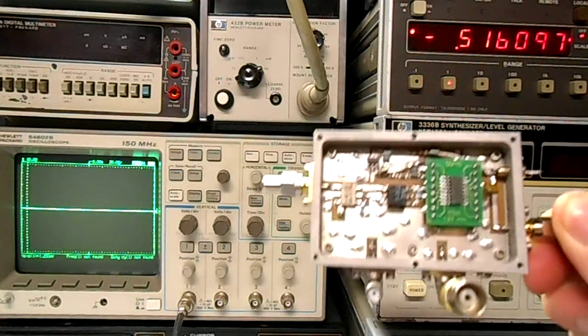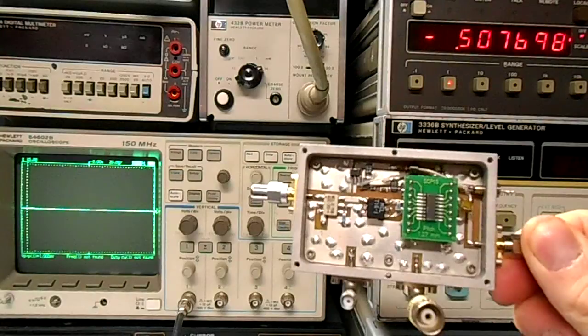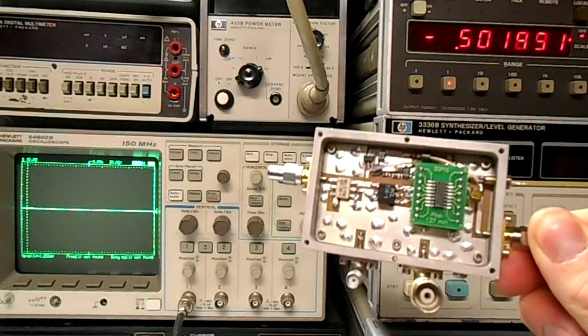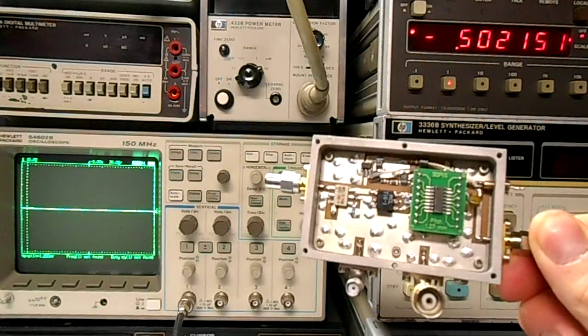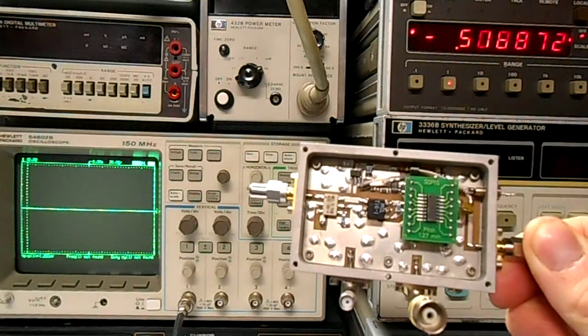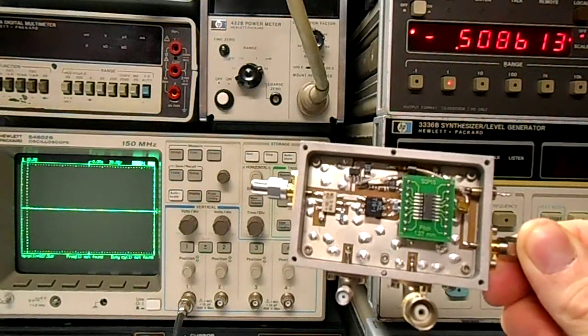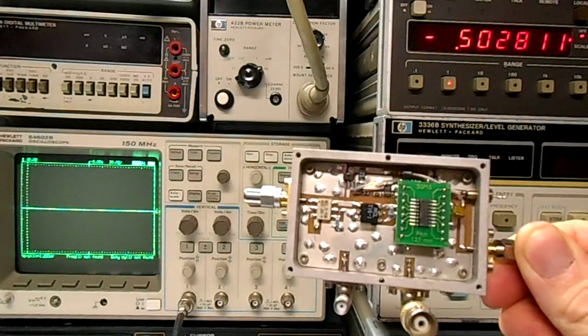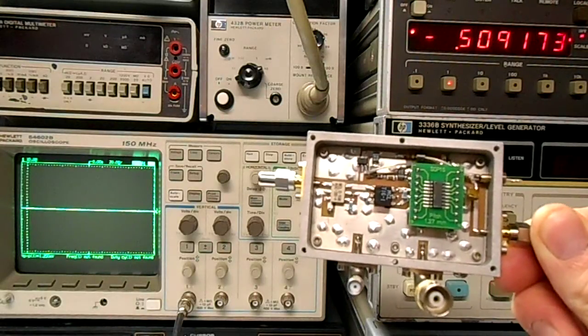This is an overview of the logarithmic detector for the Scottie Spectrum Analyzer Project. This device takes a filtered incoming 10.7 MHz IF signal and converts it to a representative DC voltage based on the input power level.